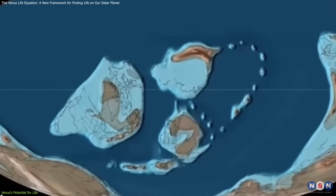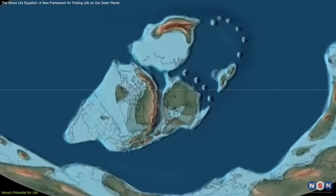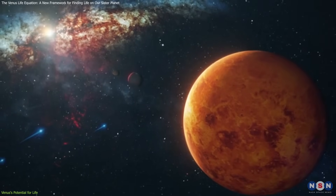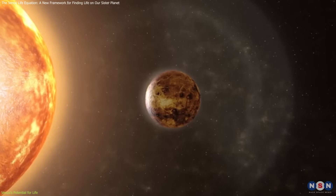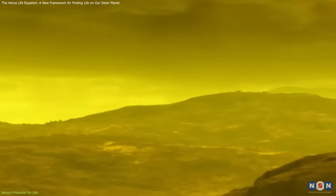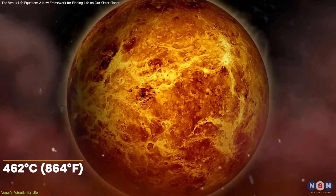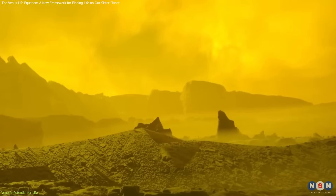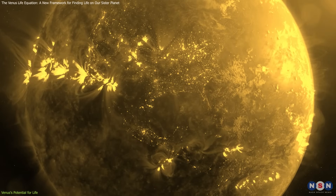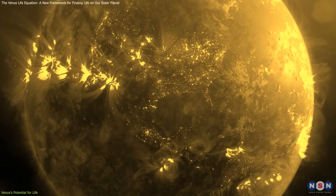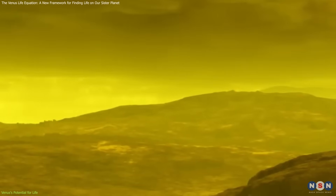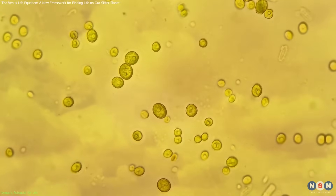Plate tectonics, which plays a crucial role in maintaining a stable climate on Earth, may have also existed on Venus. However, Venus underwent a runaway greenhouse effect, transforming it into the hostile world we see today. Its thick carbon dioxide atmosphere traps heat so efficiently that surface temperatures reach a scorching 462 degrees Celsius — 864 degrees Fahrenheit — and atmospheric pressure at the surface is 92 times that of Earth. Any liquid water long ago boiled away, accelerating the greenhouse effect. But while Venus's surface became uninhabitable, its cloud layers might still harbor life.